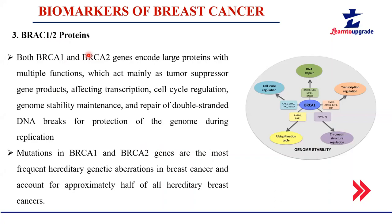In addition to BRCA1 and BRCA2, the most common protein scanned is P53. P53 is also a tumor suppressor protein that prevents the activity of cancerous cells in our body. When there is a mutation in P53, we can see the formation of tumor cells.